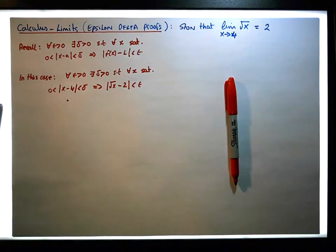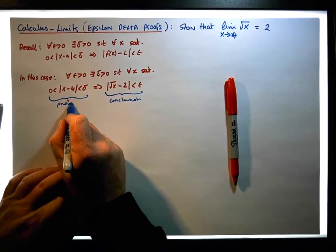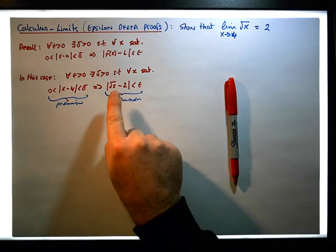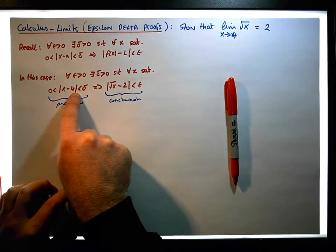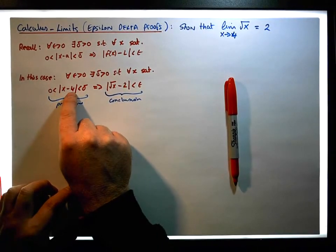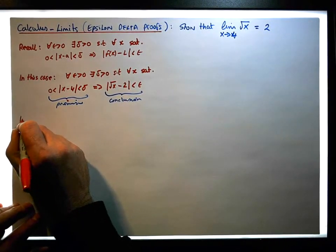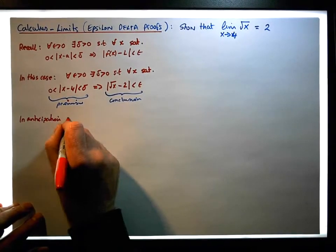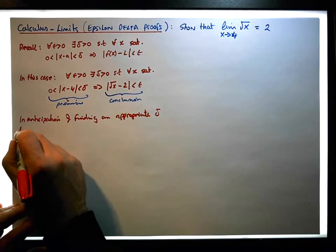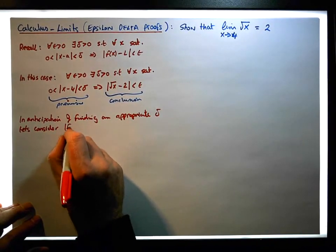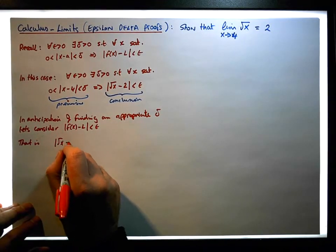From an implication perspective, this is our conclusion, and this thing over here is our premise. We're going to look at the conclusion, because it has our x defined in terms of epsilon. If we could manipulate or deduce from this something that looks like our premise, then we'll have bounded the absolute value of x minus 4 to be some multiple of epsilon, and we can then choose that to be our appropriate delta. In anticipation of finding an appropriate delta, let's consider the absolute value of f of x minus L is less than epsilon — that is, the absolute value of the square root of x minus 2 is less than epsilon.